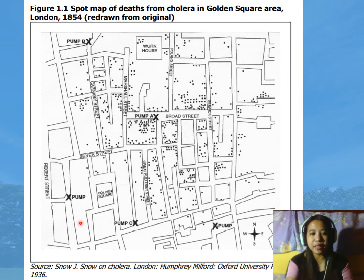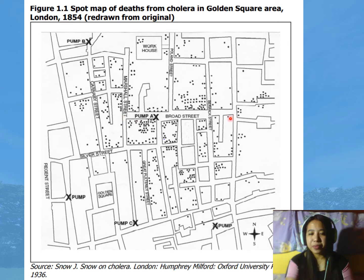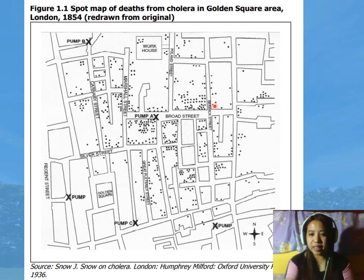He conducted a field investigation, and based on that investigation, he found that people did not use Pump B simply because they thought it was contaminated. He also noticed that in a certain part near Pump A there were fewer cases. Based on interviews, he found that the reason was that there were other sources like a deep well, which is why those residents did not get water from Pump A.